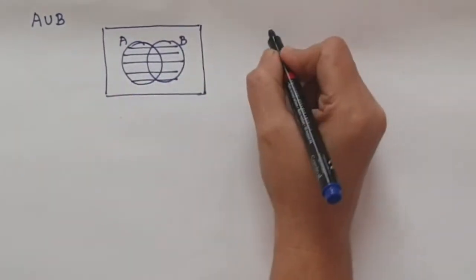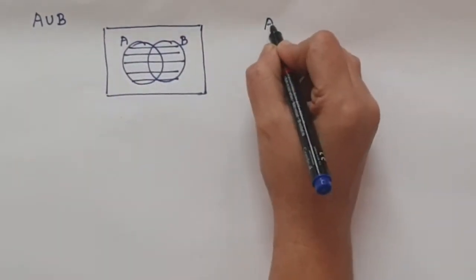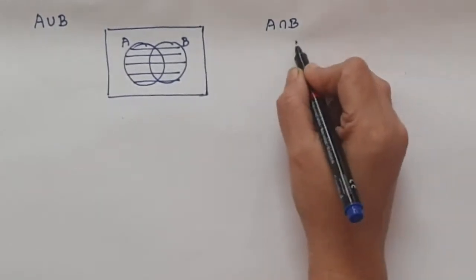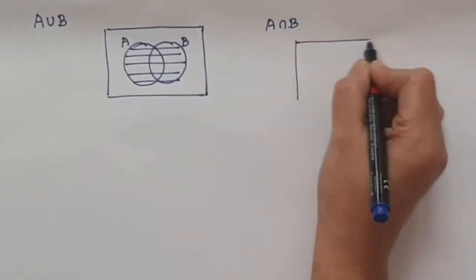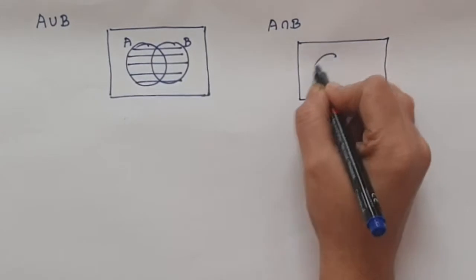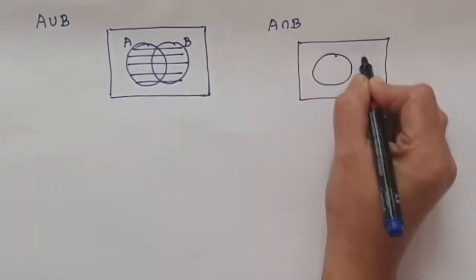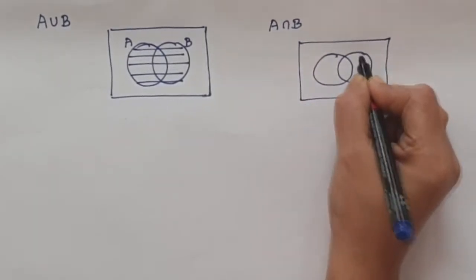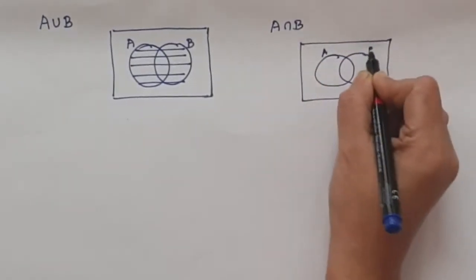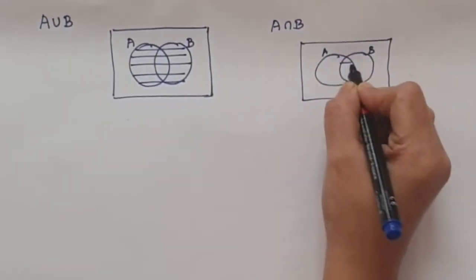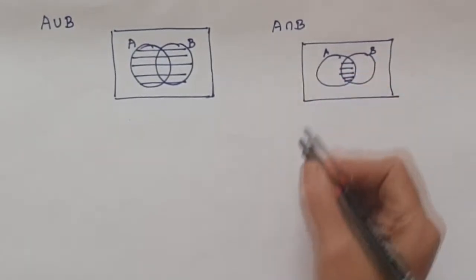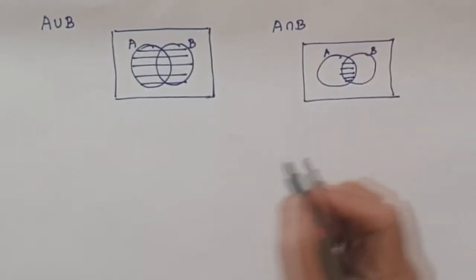Suppose if you need to shade A intersection B, we just shade only the common region of the two circles. That is, if you have circle A and circle B, we shade the common region. This will be A intersection B.